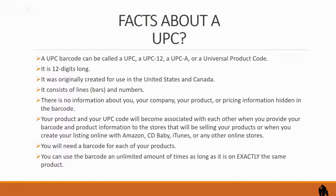Facts about a UPC: a UPC barcode can be called UPC, UPC-12, UPC-A, or Universal Product Code. It is 12 digits long — you will also see some 13-digit versions. It was originally created for use in the United States and Canada but has now expanded worldwide. It consists of lines, bars, and numbers — hence the term 'barcode.' There is no information about you, your company, your product, or pricing hidden inside the barcode. Your product and UPC become associated with each other once you provide the barcode and product information to the stores selling your products, or when you create your listing on Amazon, CD Baby, iTunes, or any other online store.